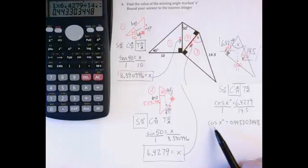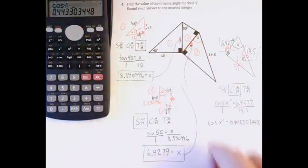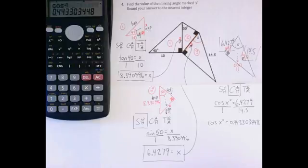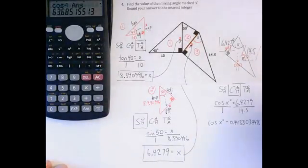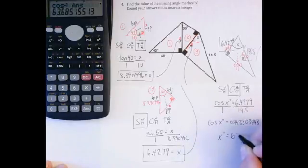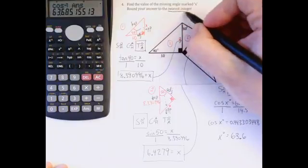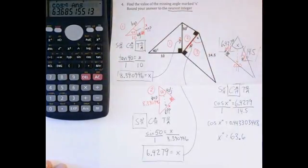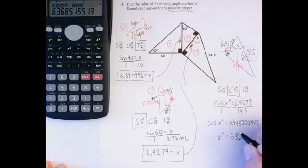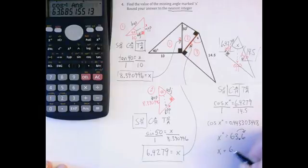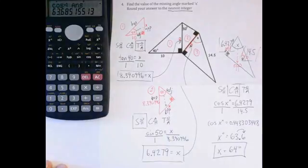And to get rid of the cos, I need to press SHIFT COS on the calculator to get that inverse cosine, press equals, and I've got an angle of 63.6. X degrees equals 63.6. They asked me to round that to the nearest integer. That's the nearest non-decimal number. So I've got to look one space to the right. That's the first spot after the decimal. If it's 5 or up, this number rounds up by 1. So X is equal to 64 degrees. And that's the answer they were looking for.